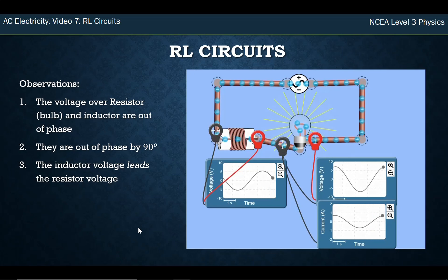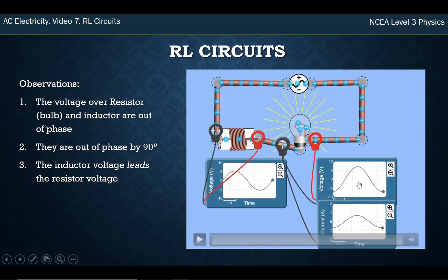Just like with our capacitor series, we have that the voltage over the resistor is out of phase with the voltage over the inductor. It leads by a quarter of a wave. You can see this is getting to the middle of its wave while this is still at the bottom, still has to get up towards the middle. So it's a quarter of a wave, 90 degrees.